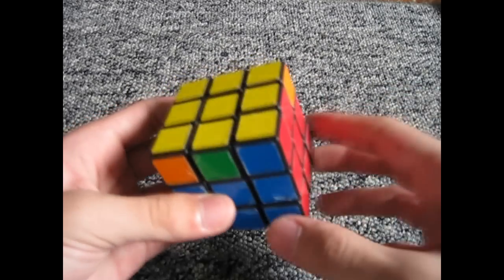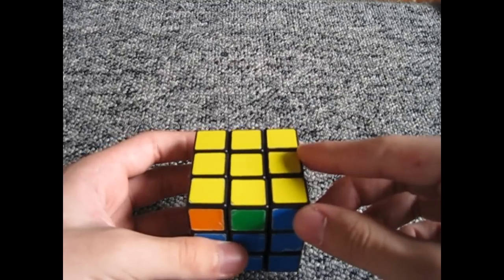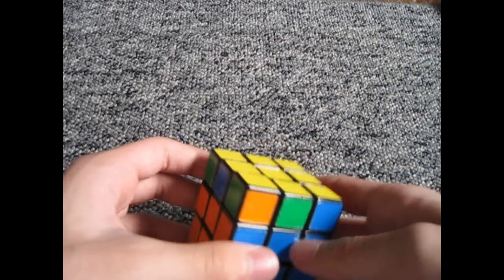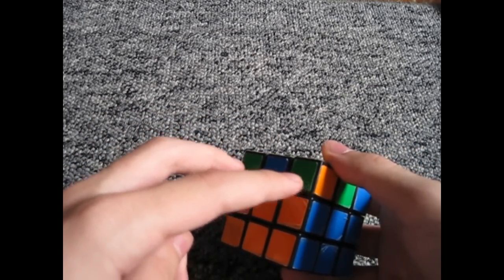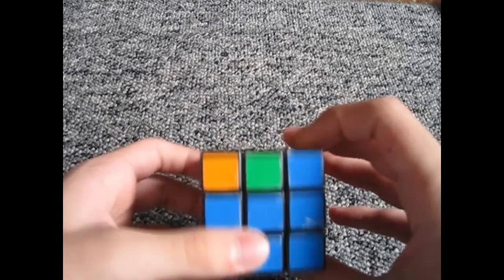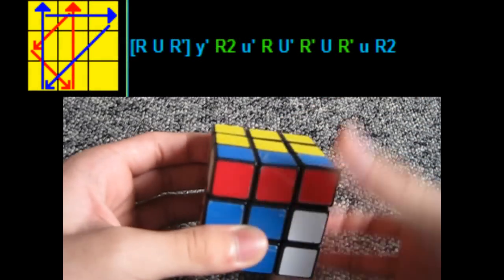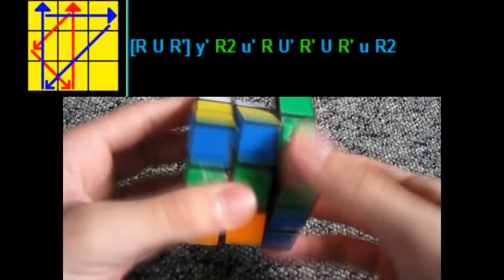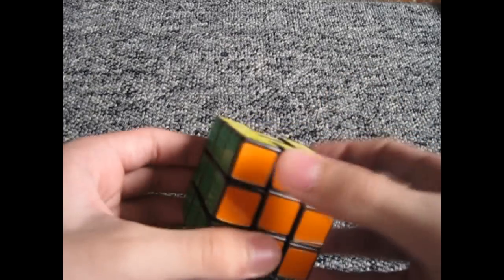And then, because this is in spot 1, you apply the first G-perm algorithm, which I'll show right here. And with headlights on the left and the block here, you apply the first algorithm. And that solves the PLL.